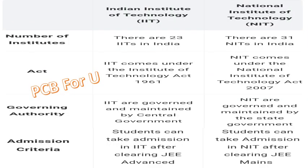There are 23 IITs in India and 31 NITs in India. IITs come under the Institute of Technology Act 1961, and NITs come under the National Institute of Technology Act 2007. IITs are governed and maintained by the central government, while NITs are governed and maintained by the state government. Admission to IIT is after clearing JEE Advanced, and for NITs it is through JEE Main.